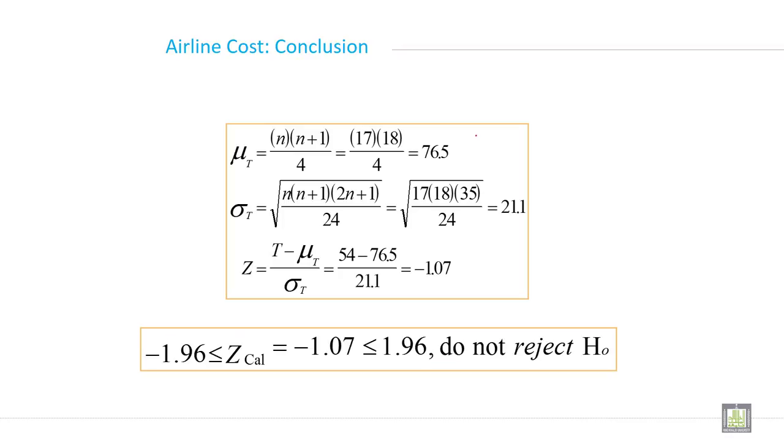Then calculate mean. So when you put the values in the formula you will get the mean 76.5 and standard deviation will be 21.1, and with the help of mean and standard deviation now you can calculate the Z value.